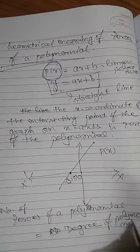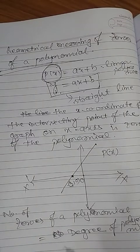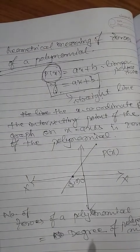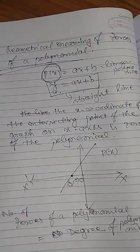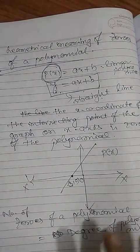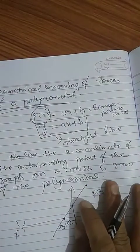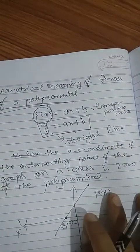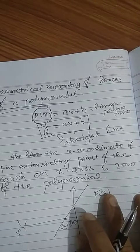The number of zeros of a polynomial equals the degree of the polynomial. Maybe the zeros are equal or not — that is a separate matter. But how many zeros you will get is determined by the degree of the polynomial. If the degree is 3, you will get three zeros — all three may be equal, or two may be equal, or all different. But you will get three zeros.